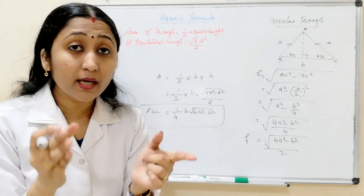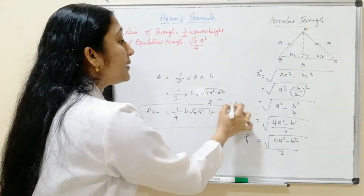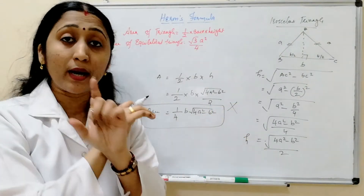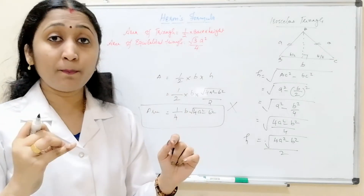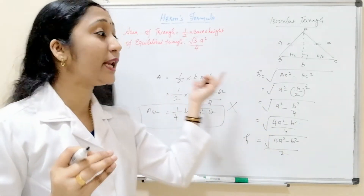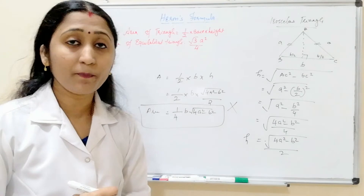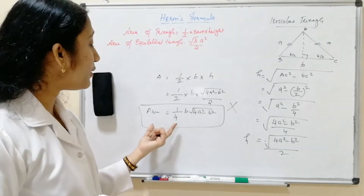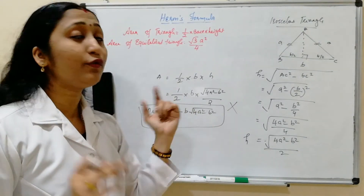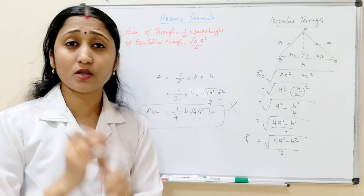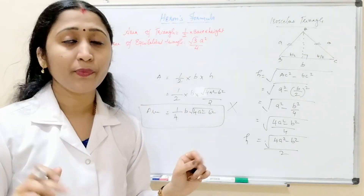As I already told you, there is no need to memorize this isosceles triangle formula. Just I have shown you how to derive this formula. The formula is area equals (1/2) into b into the square root of (4a squared minus b squared). There is no need to memorize it — leave it.